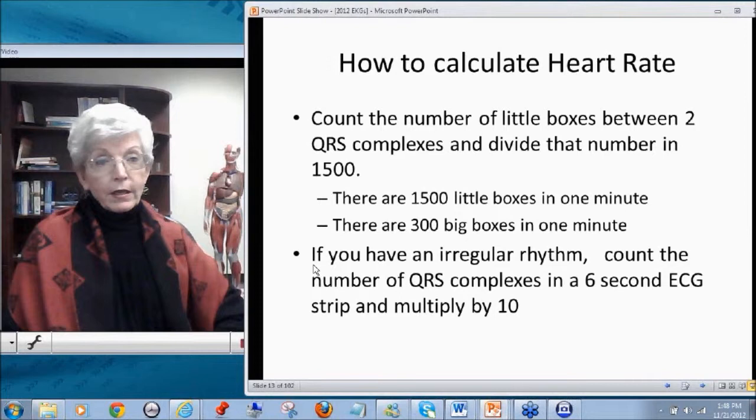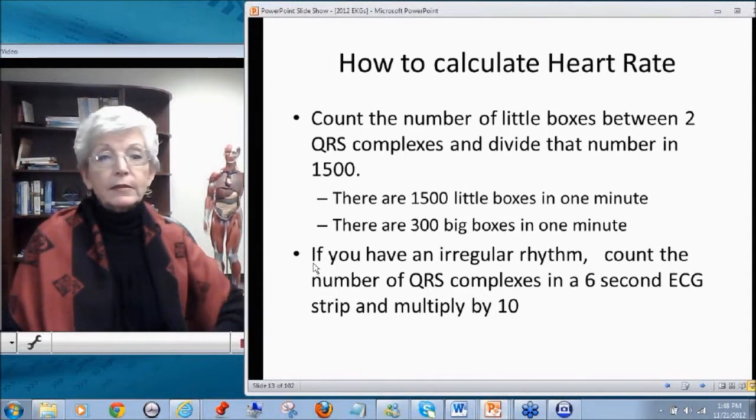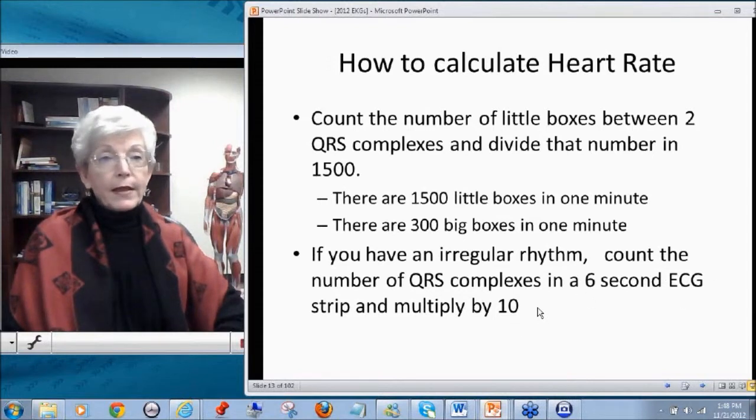This is a close, but this is exact. Now, what do you do if you have an irregular rhythm? Because there will be different intervals between two varying beats. So if you have an irregular rhythm, the best thing that you can do is to count the number of complexes that you see in a six-second strip and then multiply that by 10. That will give you a rough approximation.